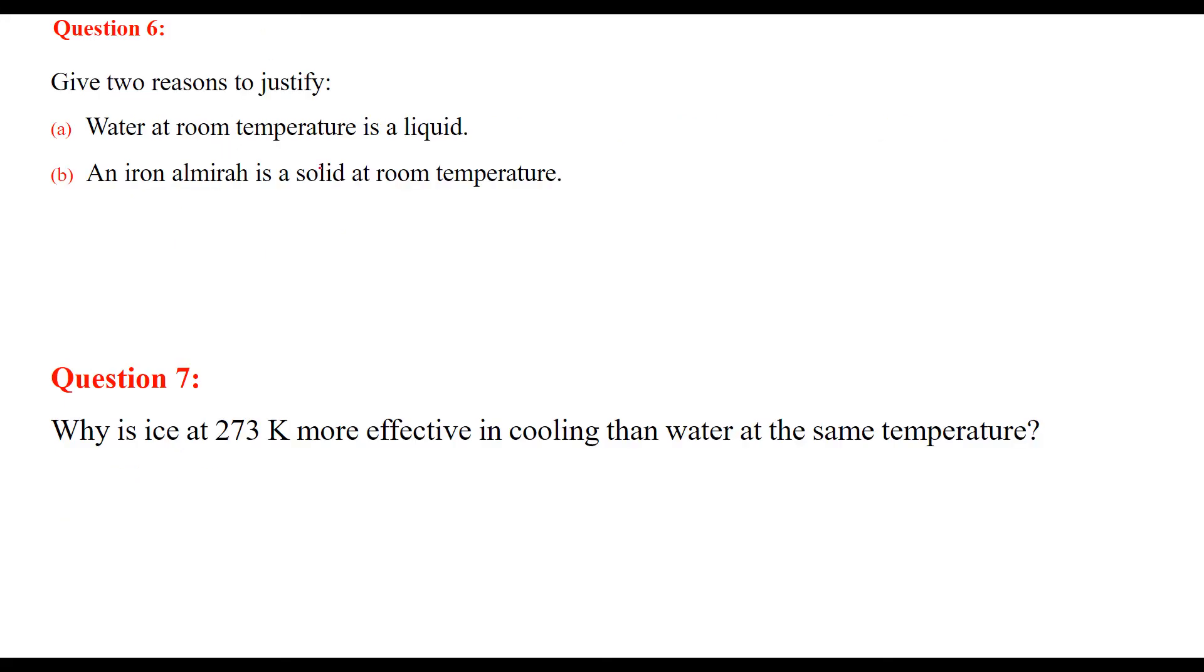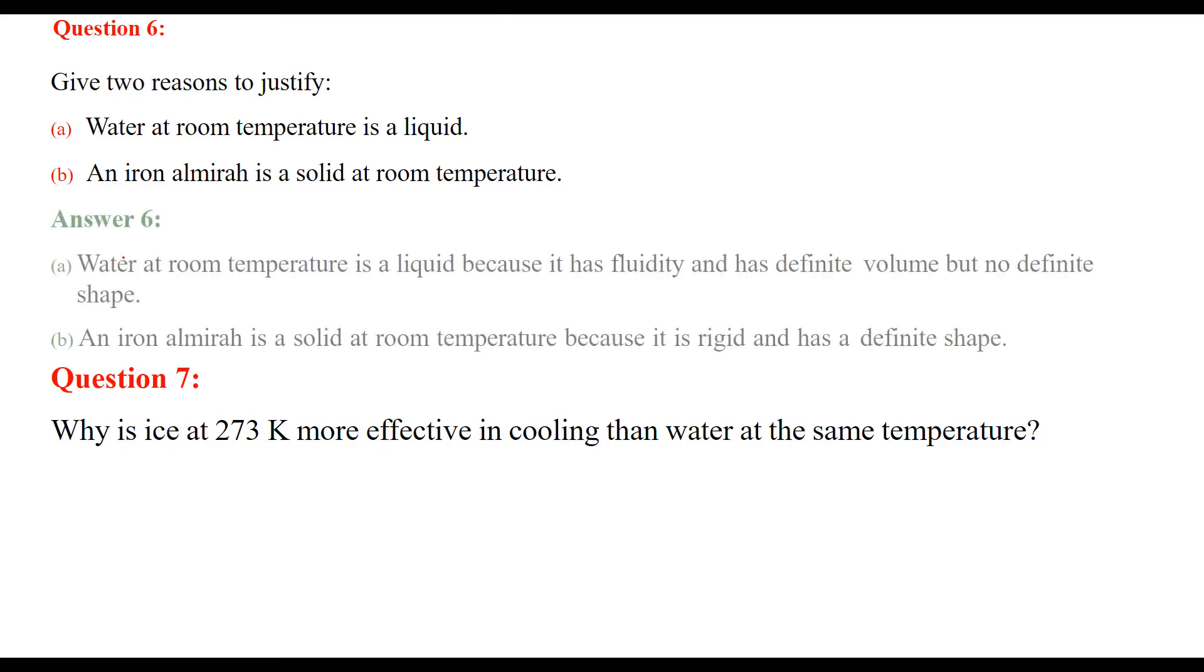Question 6: Give two reasons to justify that water at room temperature is a liquid. (a) Water at room temperature is liquid because it has fluidity and can flow, and it has definite volume but no definite shape. You can put it in a bottle or glass - it takes the container's shape while maintaining its volume.